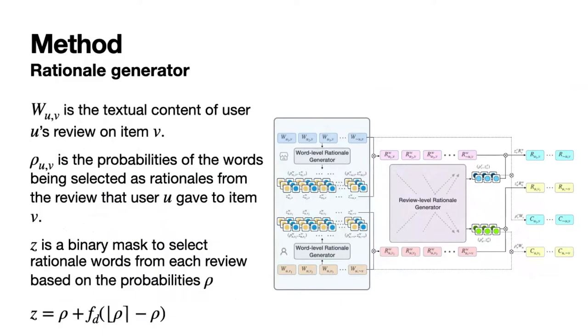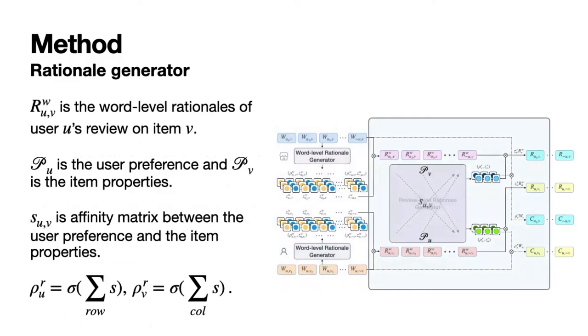In the review-level Rationale Generator, we identify rationales that fully reflect user preferences and item properties for each targeted user-item pair. User preferences PU and item properties PV are modeled by word-level rationales extracted from their historical reviews, denoted as R sub UV upper W. Then, we calculate an affinity matrix between these user preferences and item properties to select rationales that match both user interest and item properties.